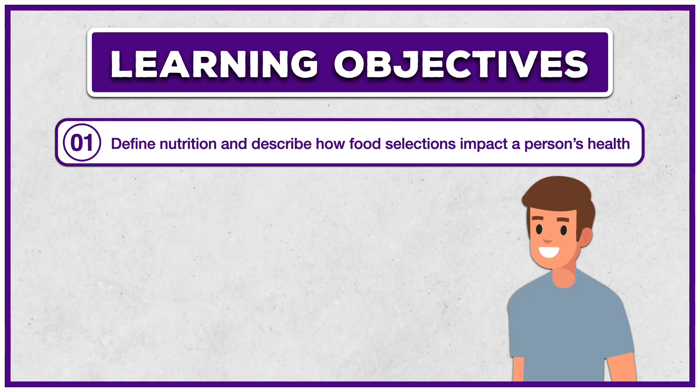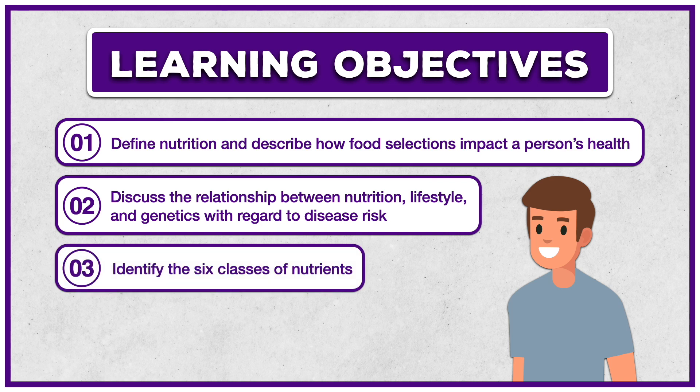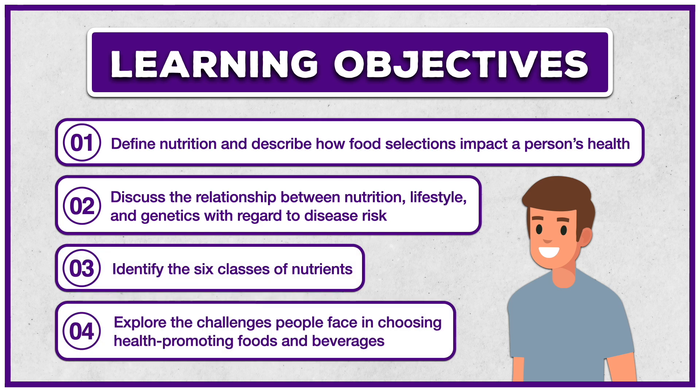The learning objectives for this lesson are to define nutrition and describe how food selections impact a person's health, discuss the relationship between nutrition, lifestyle, and genetics with regard to disease risk, identify the six classes of nutrients, and explore the challenges people face in choosing health-promoting foods and beverages.